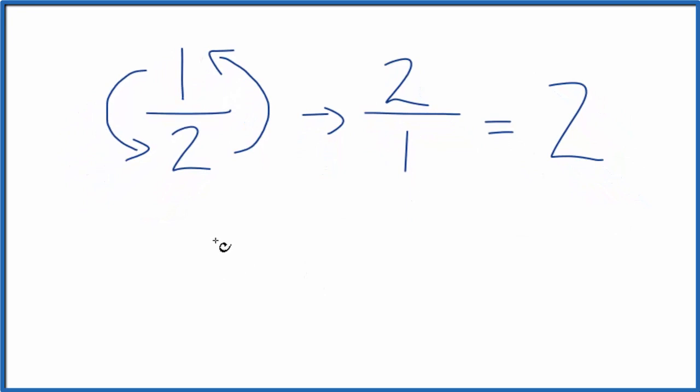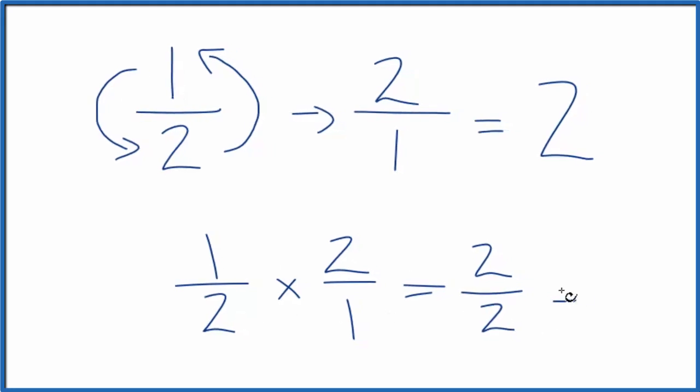We can check our work by taking the original fraction, the 1 half, and multiplying it by the reciprocal, that 2 over 1. So 1 times 2, that equals 2. 2 times 1, that equals 2. 2 over 2 is 1.